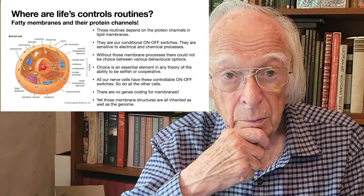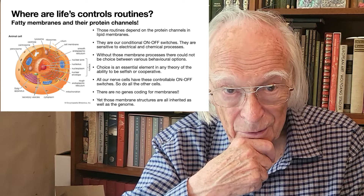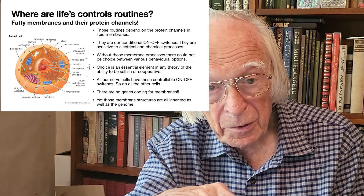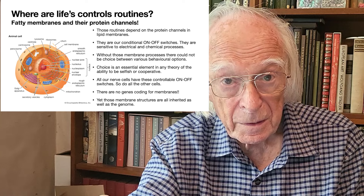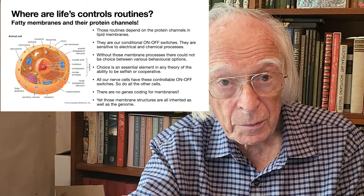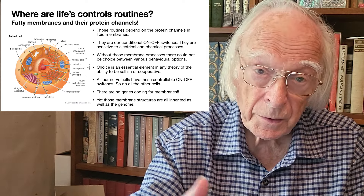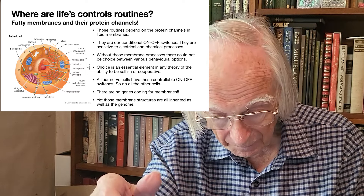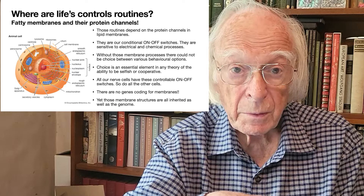Now we come to a very important point: there are no genes coding for membranes. DNA codes only for RNA and proteins. Membranes are a totally different kind of molecule — formed from what we call phospholipids, fatty substances that can form a bit like soap bubbles. Yet all of those membrane structures are inherited as well as the genome. We don't arise just from the genome of the sperm and egg — we also inherit all this complex cellular structure, because that was the egg cell of our mother.